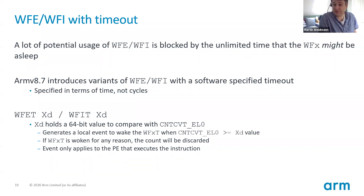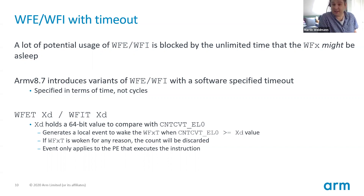To address this, we're adding a new version of both instructions: WFET and WFIT — the T for timeout — and they allow you to specify alongside the instruction a timeout. If one of the regular wake-up events has not occurred by the time the timeout elapses, then you wake up anyway. So it's a way of putting a maximum time that you wish to be asleep for. The way this is encoded is a value compared against the system counter — the standard time used for all built-in timers. And it's important to say it is time, not cycles, so if you're doing things like DVFS, it's not going to change how long you're asleep for.